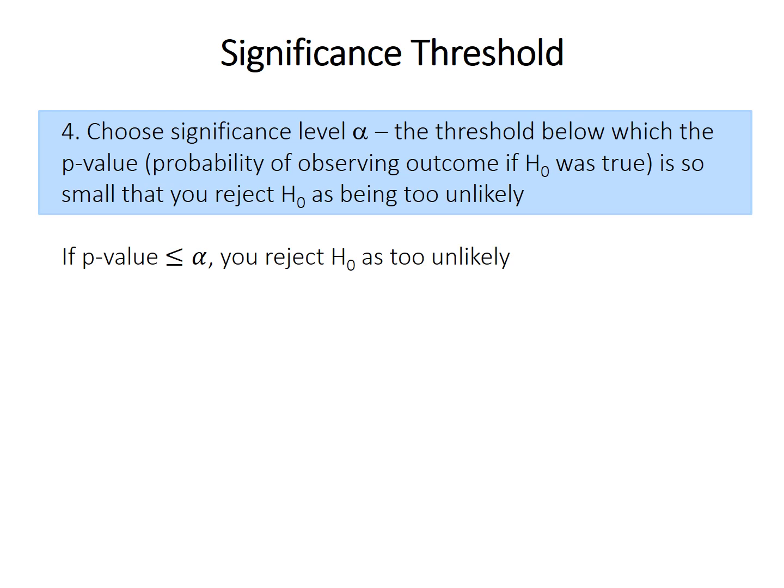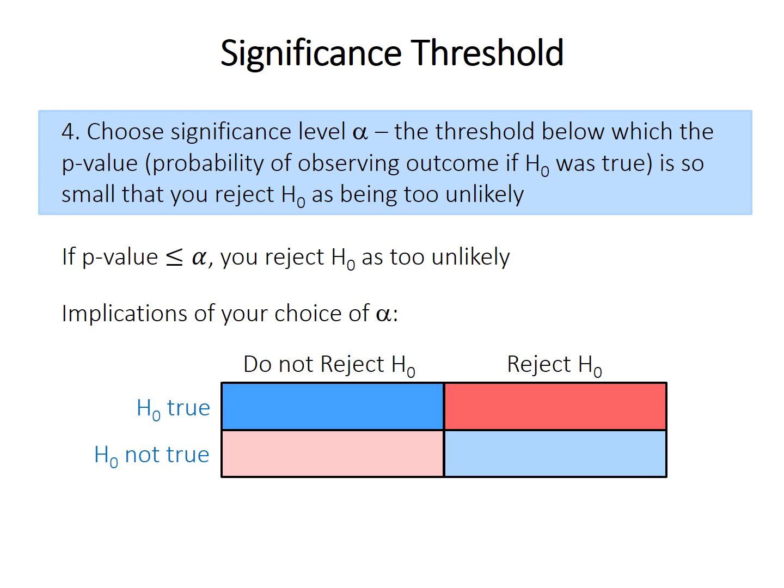So remember that the p-value, again, is the probability of observing an outcome at least as extreme as your result in the case where the null hypothesis was, in fact, true. But what level should we choose for alpha? And what are the implications of that choice?